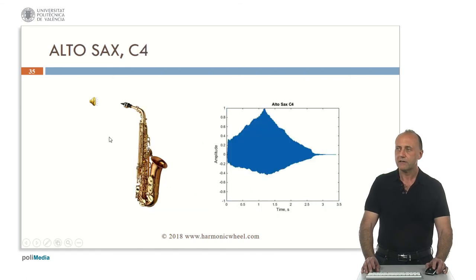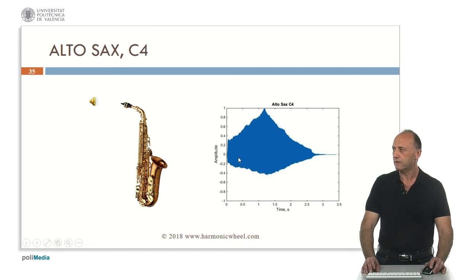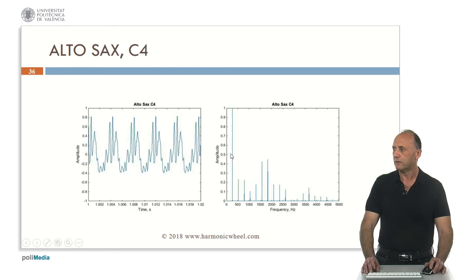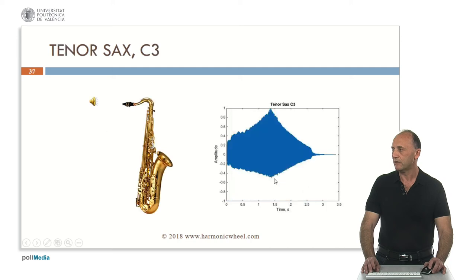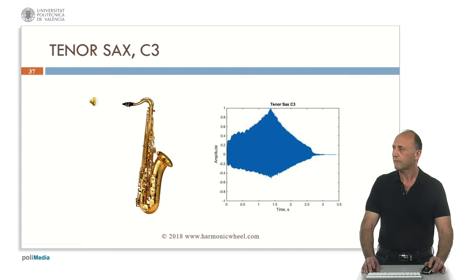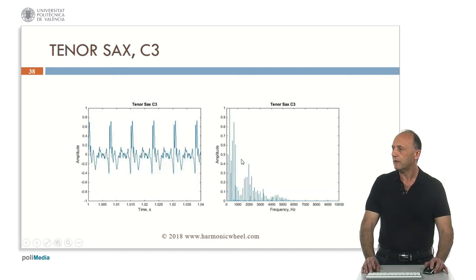Now the alto sax, C4. This is the envelope, the waveform and the spectrum. It contains many harmonics. The tenor sax, C3. The envelope and then many harmonics in the spectrum.